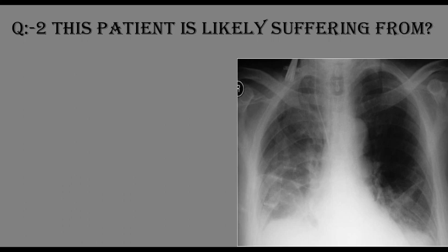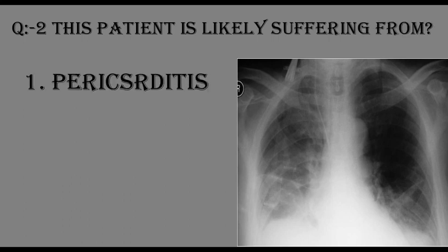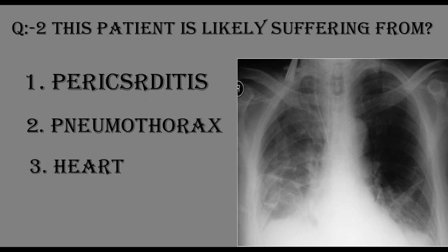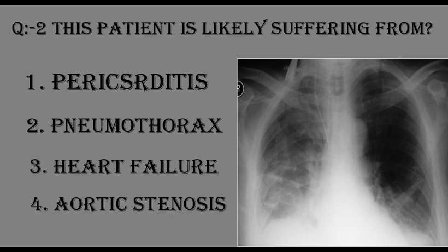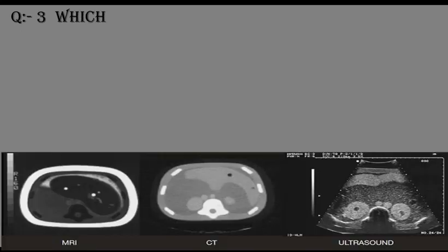Question number two: this patient is likely suffering from which of the following? Number one: pericarditis. Number two: pneumothorax. Number three: heart failure. Number four: aortic stenosis.